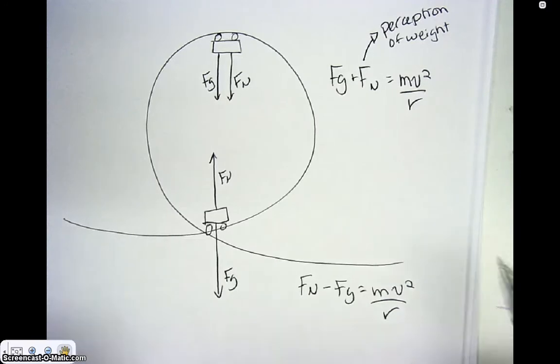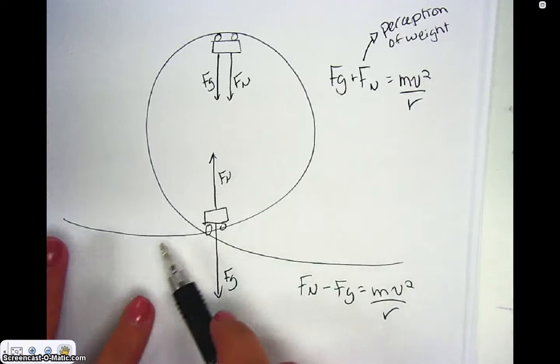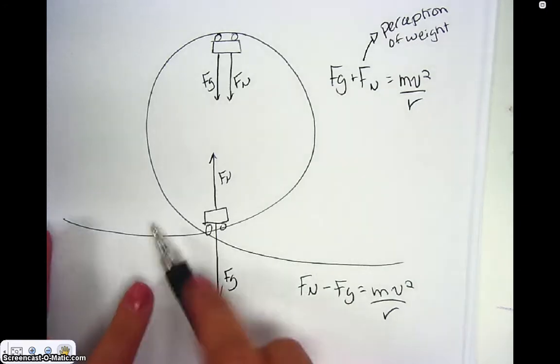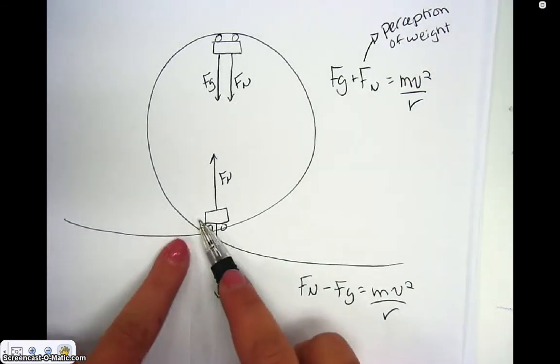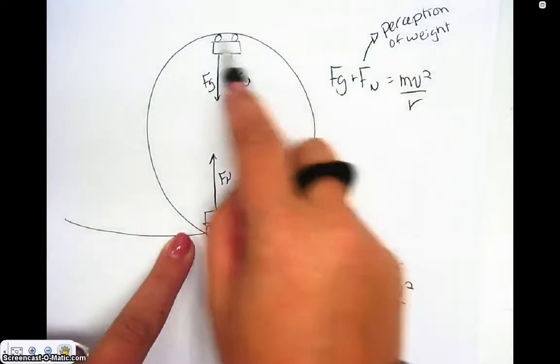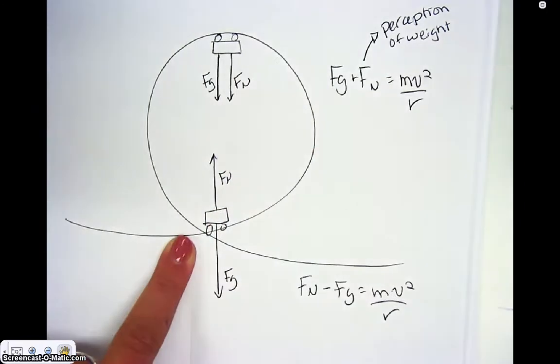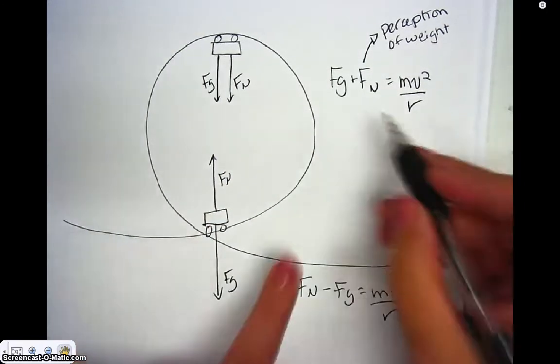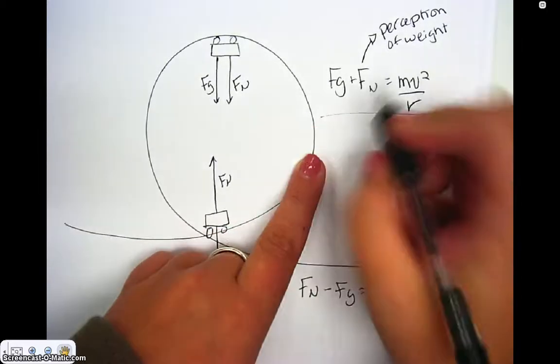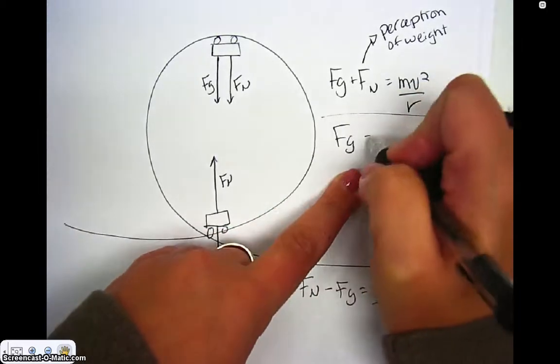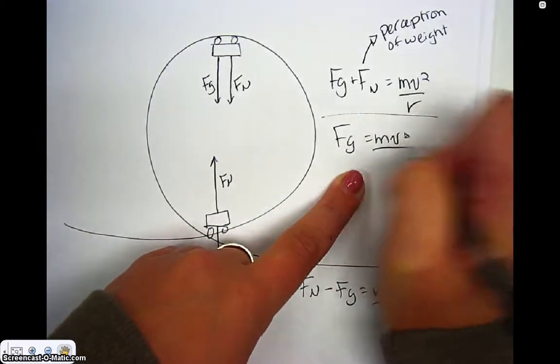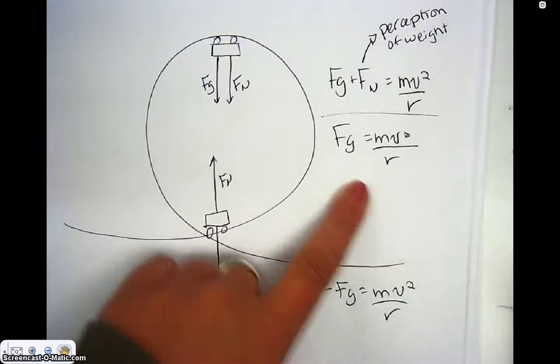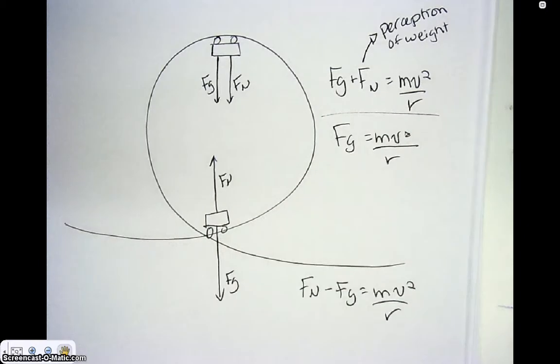You might be asked questions about, at what velocity does a roller coaster need to be going at the top of this loop in order for you to feel weightless? If you felt weightless, then your sum of all forces equation would be this. Your normal force would actually be equivalent to zero because that is your perception of your weight.